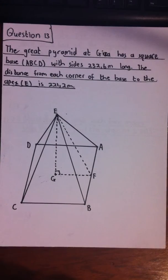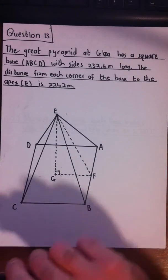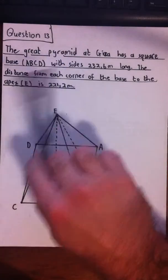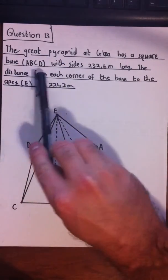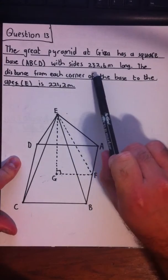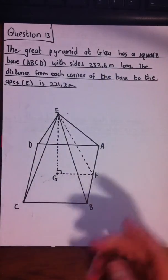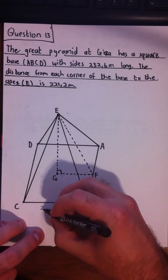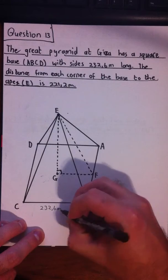We come to the last question in this paper: Question 13, trigonometry. The Great Pyramid at Giza has a square base A, B, C, and D, with sides 232.6 meters long. Since it's a square, all sides are equal, so let's write this in: 232.6 meters.